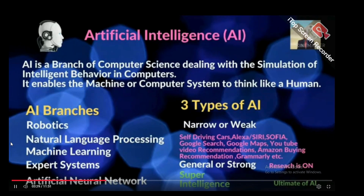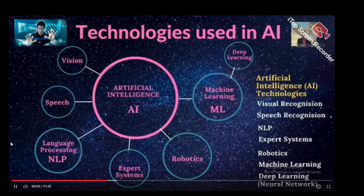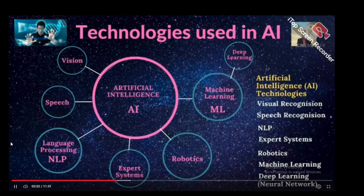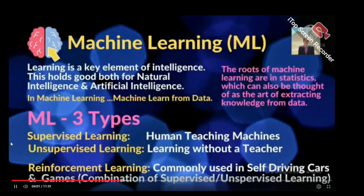Now, technologies used in AI: visual recognition, speech recognition, Natural Language Processing (NLP), expert systems, robotics, machine learning, deep learning, and neural networks. Deep learning and neural networks are a subset of machine learning.